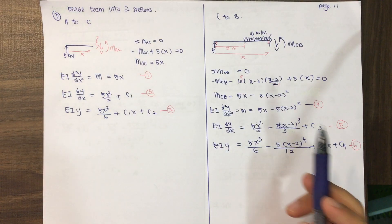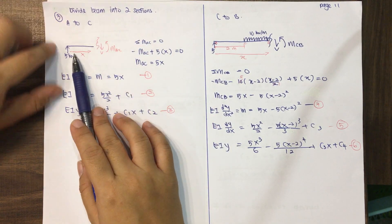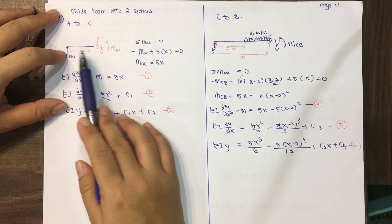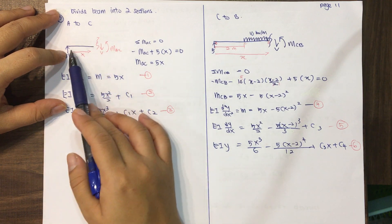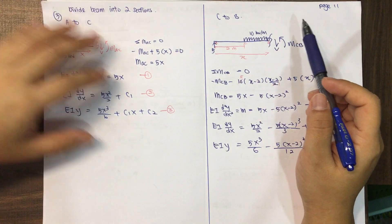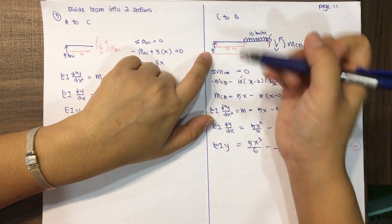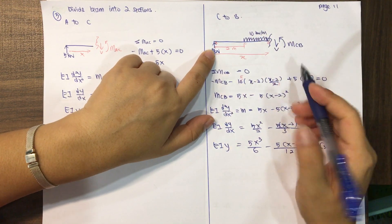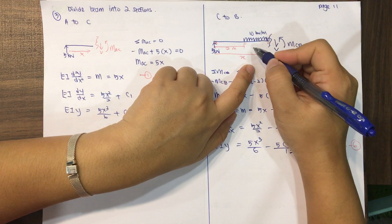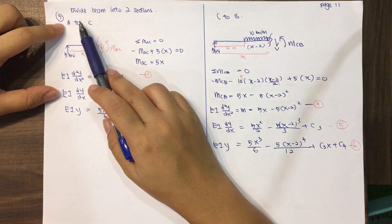We divide the beam into two parts. For section AC, we cut before the uniform distributed load. This gives 5 kilonewtons at A, with X measured to the right, and we identify the shear V and moment M at the cut. For section CB, we cut just before support B, including the 5 kilonewton reaction from A and the uniform distributed load of 10 kilonewtons per meter over a distance of X minus 2.